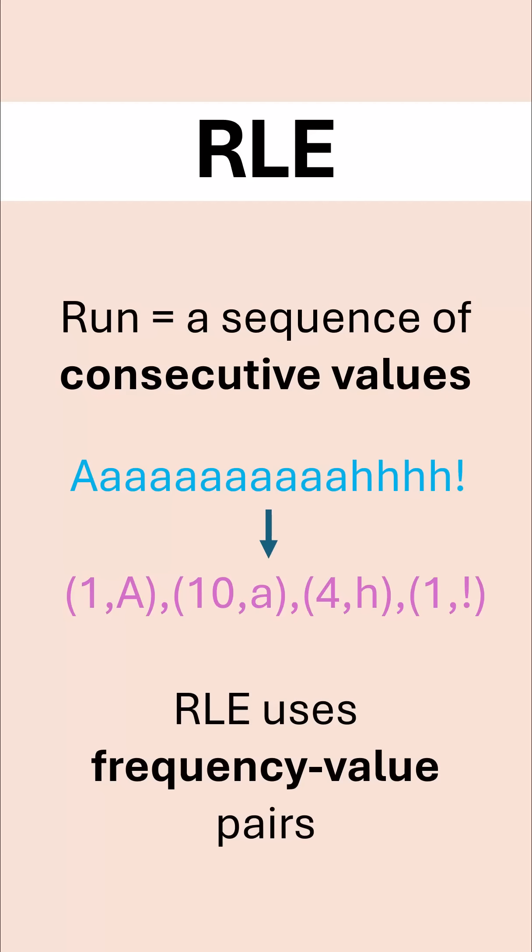Of course, we're trying to reduce file size here. And so the idea is that instead of storing the lowercase a 10 separate times, we store it once with how many times it occurs. And to decompress, it can use the frequency and the value to put it back to the original.